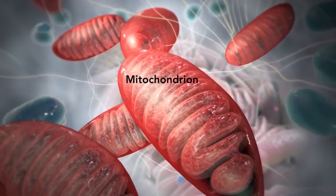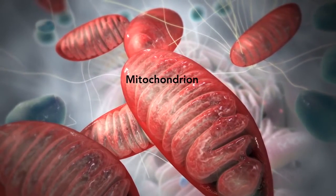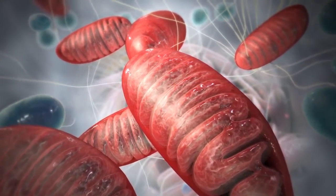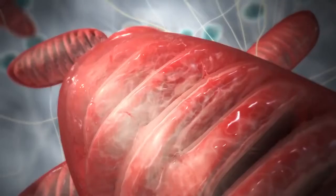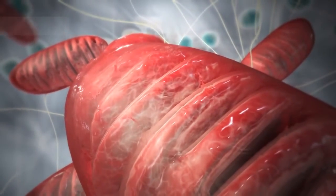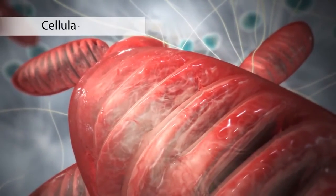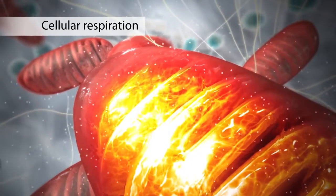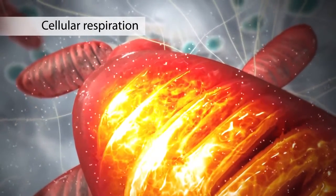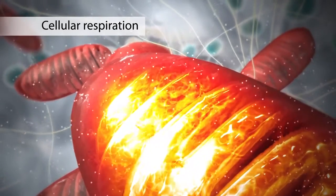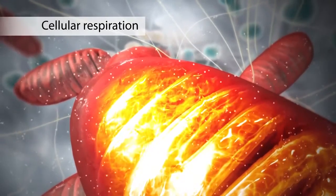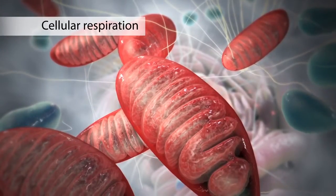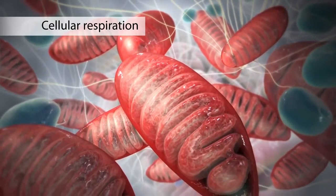The mitochondrion is an organelle that is the powerhouse for both animal and plant cells. During a process called cellular respiration, the mitochondria make ATP molecules that provide the energy for all of the cell's activities. Cells that need more energy have more mitochondria.